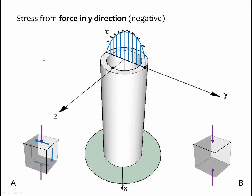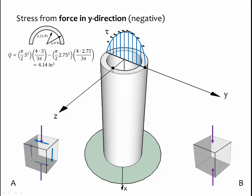First let's find Q. Because A lies on the neutral axis, we will take the area for our Q — that's the A prime area — as the area above or below that point, and that area is a half pipe area. We can find the Q value for this half pipe area as the Q value for the outside semicircle minus the Q value for the inside semicircle. These two terms represent the areas, and these two terms represent the centroid of a semicircle. And we get a value of Q of 4.14 inches cubed.